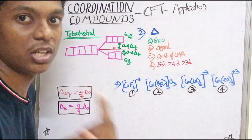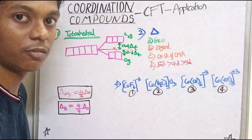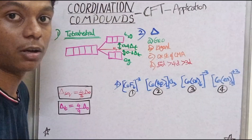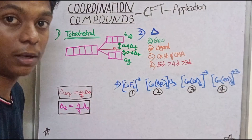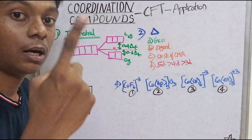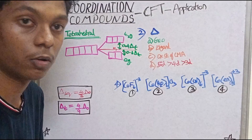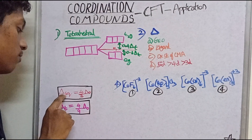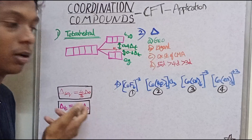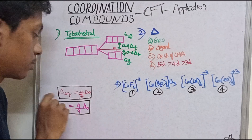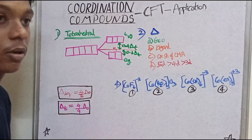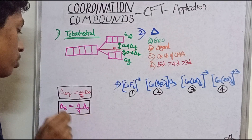To summarize: in octahedral, the lower set is T2g and the upper set is Eg. In tetrahedral, it is reversed — lower is Eg and upper is T2g. Now, comparing splitting energies across geometries: square planar splitting energy equals (4/3) of octahedral splitting energy, and tetrahedral splitting energy equals (4/9) of octahedral splitting energy.